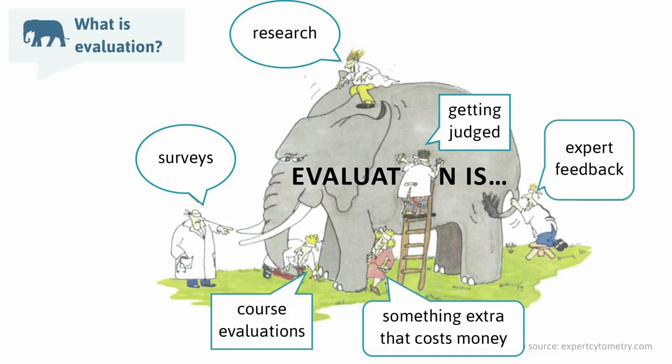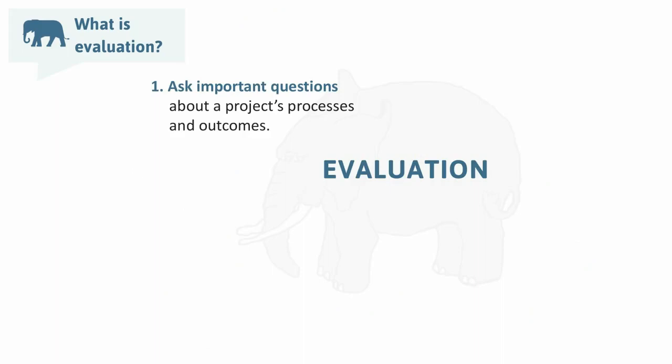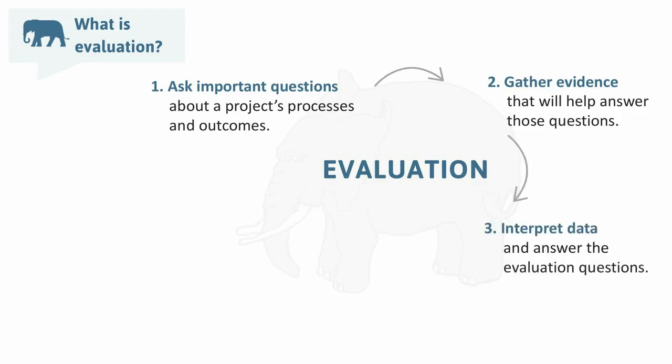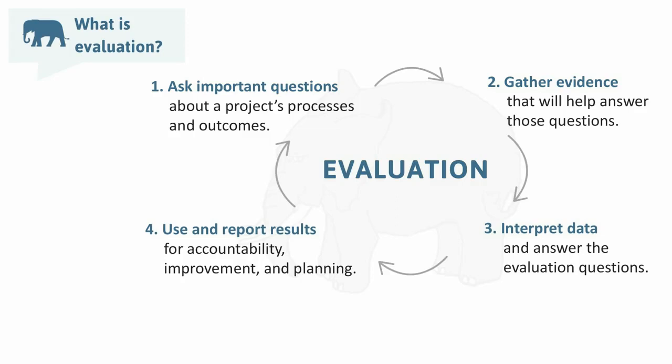Boiled down to its main parts, evaluation involves four main steps. First, asking important questions about a project's processes, outcomes, or other dimensions — making sure the evaluation focuses on things that really matter. Second, gathering evidence to answer those questions. Third, making sense of that data by interpreting results and answering the evaluation questions. Fourth, using the information for accountability, improvement, and planning. This last step then informs decisions about the next project, creating a cyclical nature.